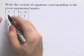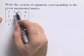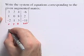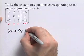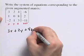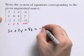These are the coefficients. If we read this first equation from our augmented matrix, we would write 3x plus 2y plus 4z equals negative 6.